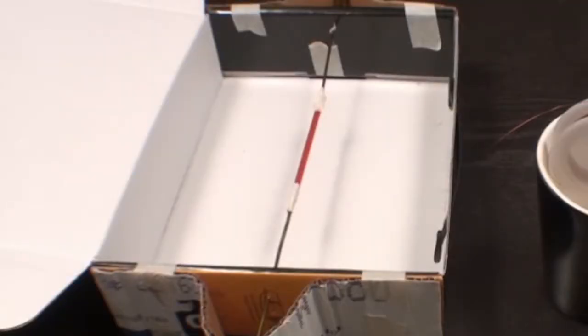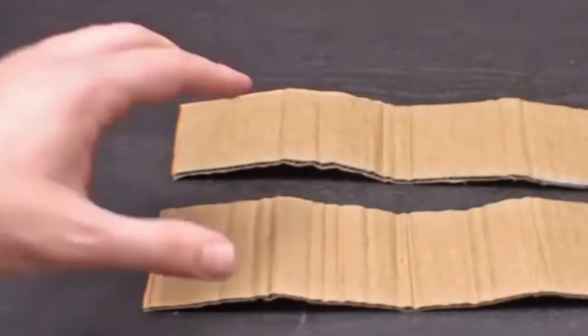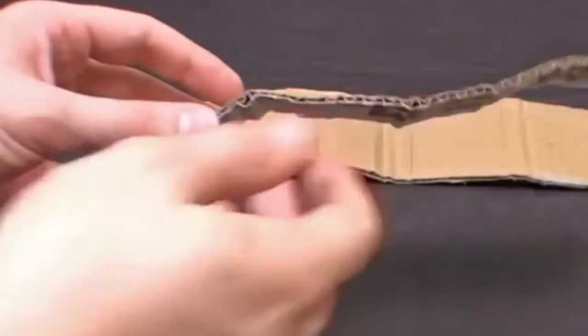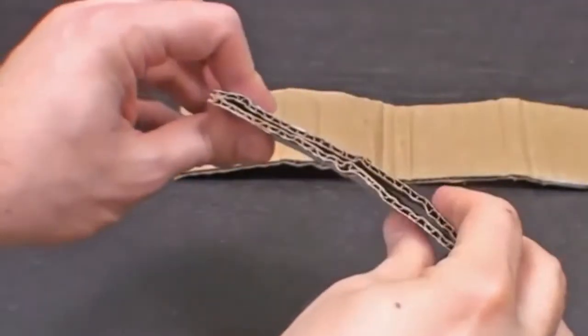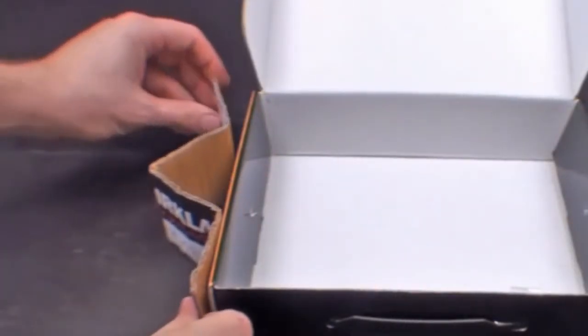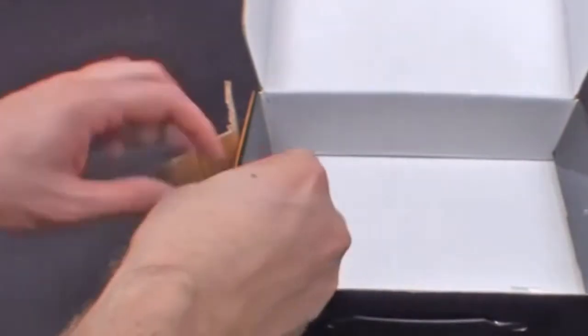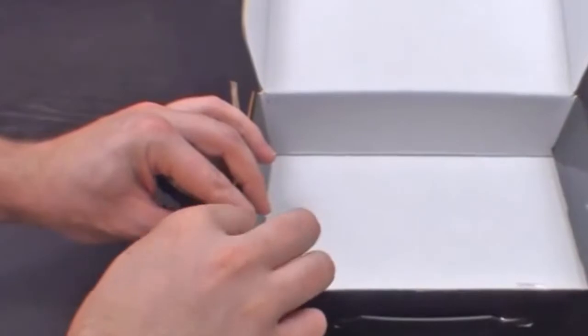First thing we need to do is create a winding mechanism. Take the corrugated cardboard and fold it into quarters. Use the box the kit came in as a base for the winding mechanism. Tape the folded cardboard onto the side of the box.